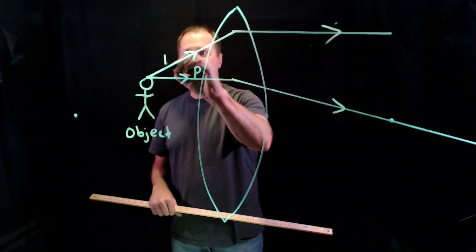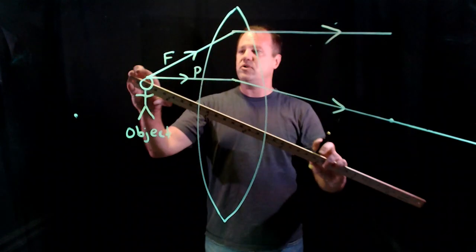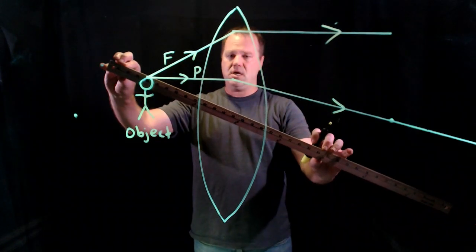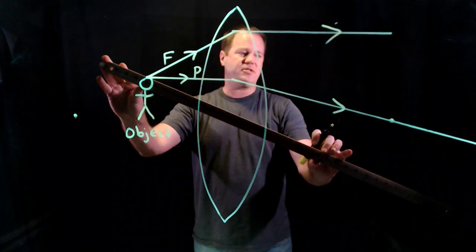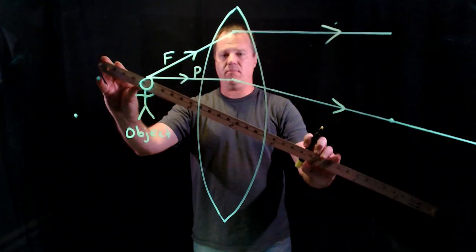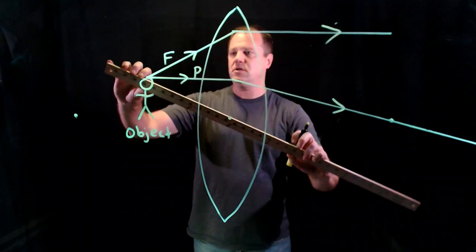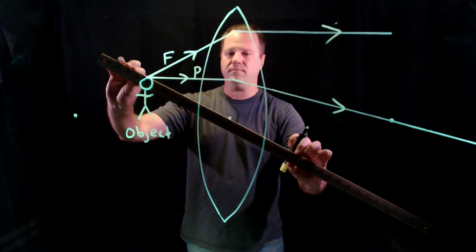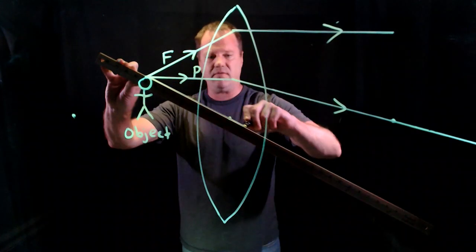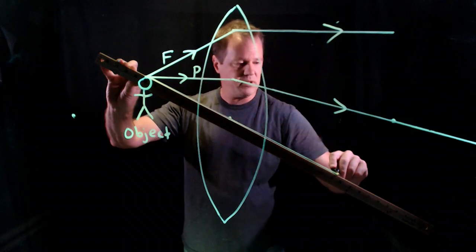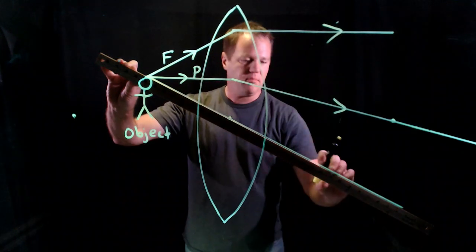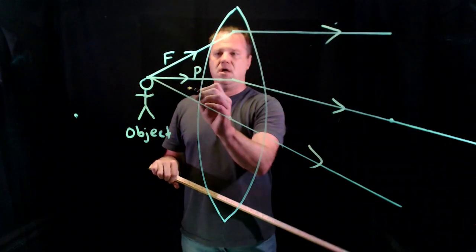And then the third ray would go through the center of the lens, and that one passes through more or less unimpeded. So I locate the very center of the lens and I pass through that like this, more or less unimpeded, a very slight deviation as it goes in and out, but basically straight.